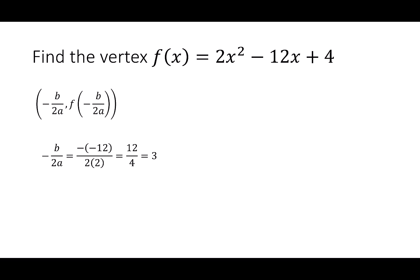To get the k, I'm going to plug the 3 back into the function. f(3) gives me 2(3)² - 12(3) + 4. This simplifies down to -14. My vertex is (3, -14), and once again this is a minimum because the leading coefficient is a positive value.